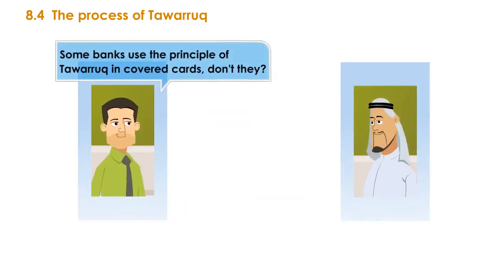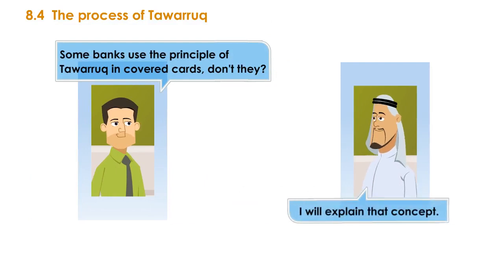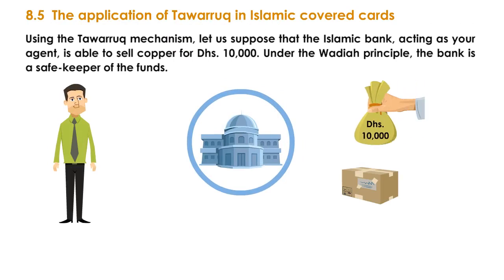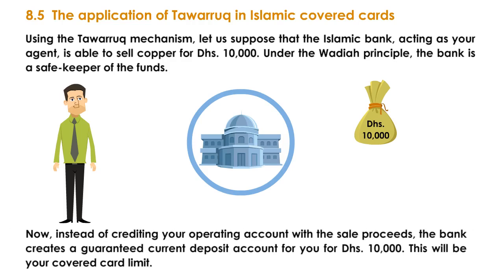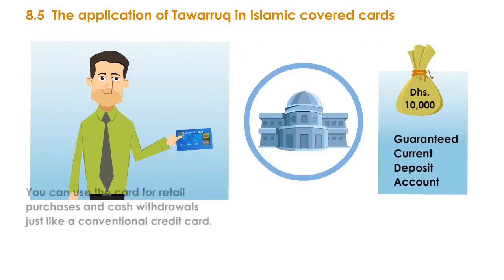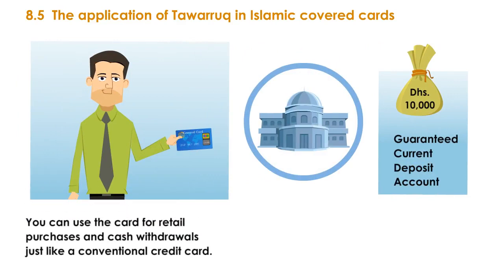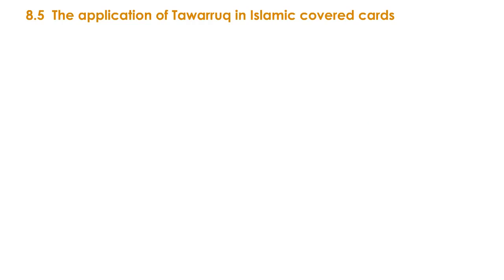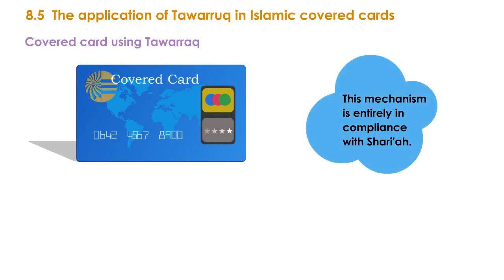Islamic covered cards. Some banks use the principle of Tawaruk in covered cards. Using the Tawaruk mechanism, suppose the Islamic bank acting as your agent is able to sell copper for 10,000 dirhams. Under the Wadiah principle, the bank is a safekeeper of the funds. Instead of crediting your operating account with the sale proceeds, the bank creates a guaranteed current deposit account for you for 10,000 dirhams — this will be your covered card limit. You can use the card for retail purchases and cash withdrawals just like a conventional credit card, and your transactions will be backed by the cash held in your Wadiah account. This mechanism is entirely in compliance with Sharia.